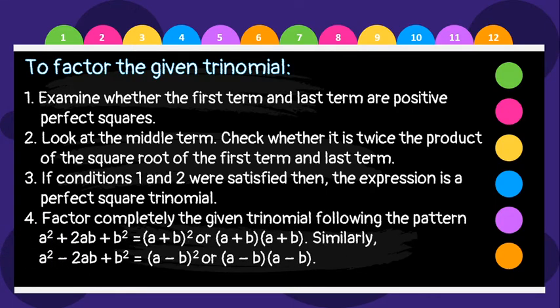For step 4, factor completely the given trinomial following the pattern: a squared plus 2ab plus b squared equals the quantity of a plus b squared, or the quantity of a plus b times the quantity of a plus b. Similarly, if the given is a squared minus 2ab plus b squared, the factors are the quantity of a minus b squared, or the quantity of a minus b times the quantity of a minus b.